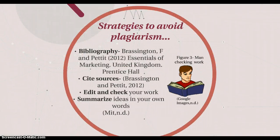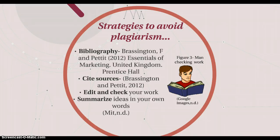Strategies to avoid plagiarism. As a university student writing an academic piece of writing for your degree, there are five main things you should do to avoid plagiarism. The first is to have a bibliography at the end of your work — for example: Brashton F. and Pete S., 2012, Essential Marketing, United Kingdom, Prentice Hall. The second is to cite sources that you use in your assignment, for example Brashton and Pete, 2012. By having a bibliography and citing sources you are giving credit to the authors whose work you have used to gather ideas and arguments.